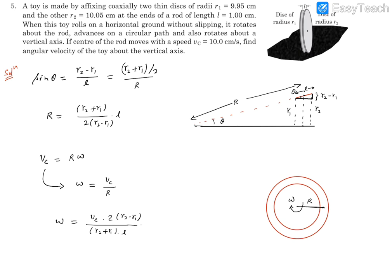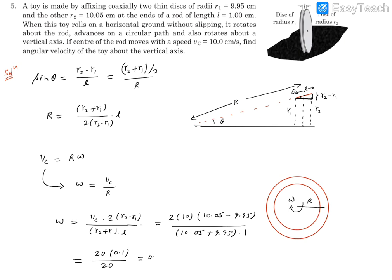Now let's put in the values. vc is 10 centimeters per second. r2 minus r1: r2 is 10.05 and r1 is 9.95, giving 0.1. r1 plus r2 adds to 20. L is 1. So omega equals 2 times 10 times 0.1 divided by 20 times 1, which simplifies to 0.1 radians per second. So the answer is 0.1 radians per second.